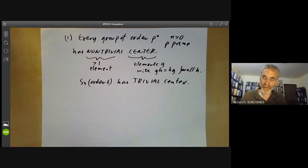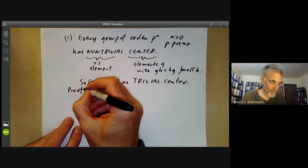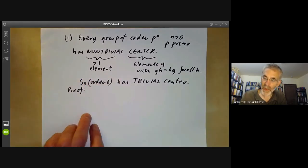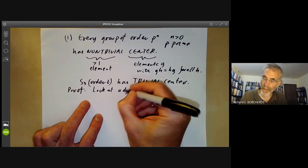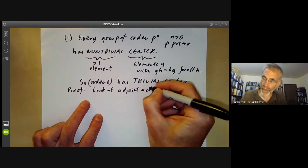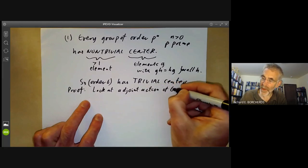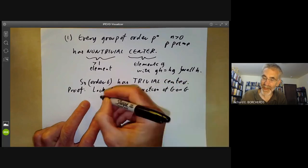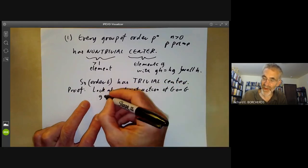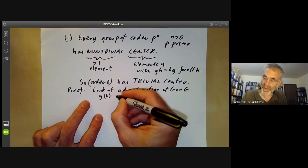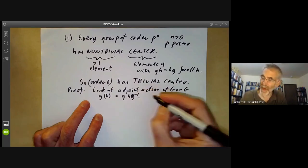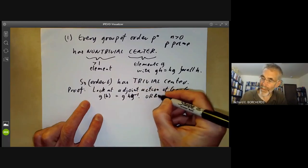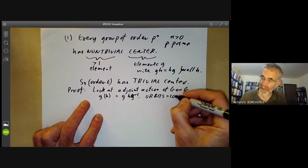And the proof of this, what we're going to do is we look at the adjoint action of G on G. So you remember, this is the action where G acts on an element H by taking it to GHG to the minus 1.